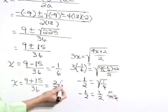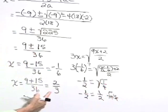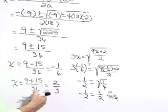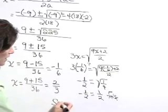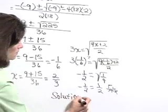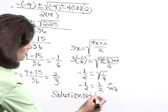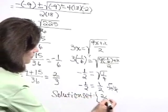I'm going to leave this other one for you to check. Substitute 2 thirds into your original equation. It does work. It creates a true statement. Here, our solution set is positive 2 thirds.